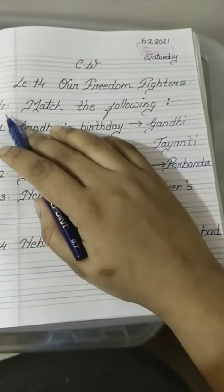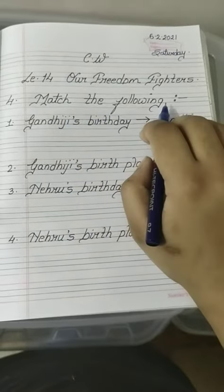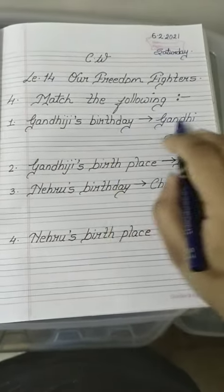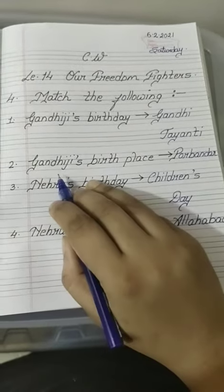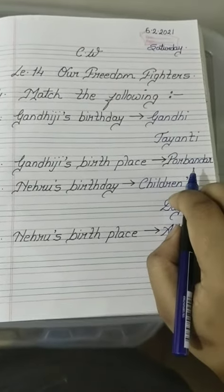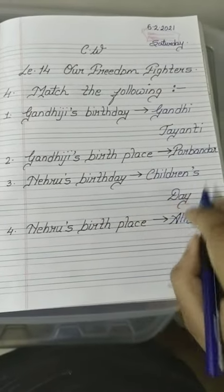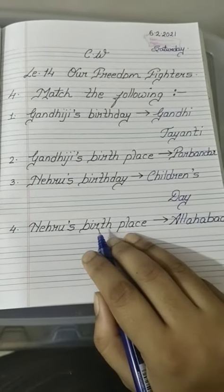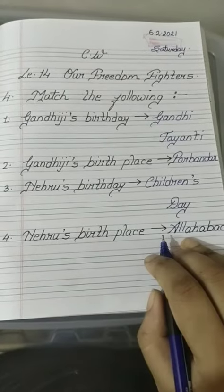Exercise 4 — Match the Following. Number 1: Gandhiji's birthday — the correct answer is Gandhi Jayanti. Number 2: Gandhi's birthplace — you have to match with Porbandar. Number 3: Nehru's birthday — which day is Nehru's birthday? Children's Day. Nehru's birthplace — Allahabad.